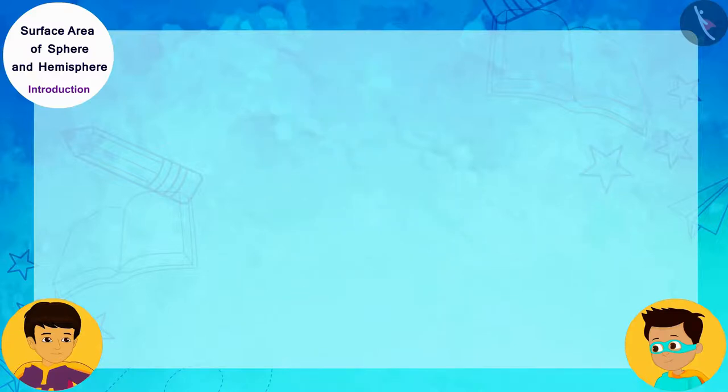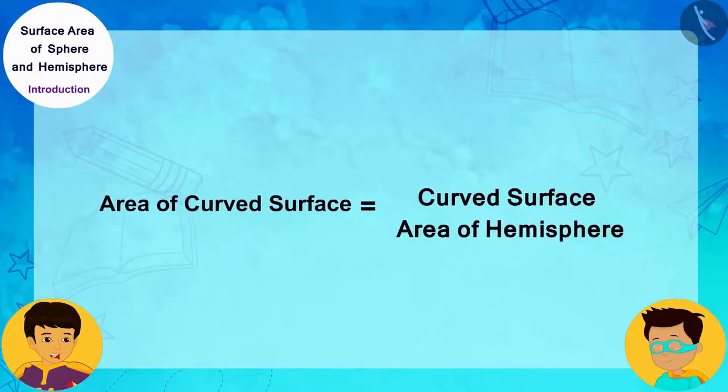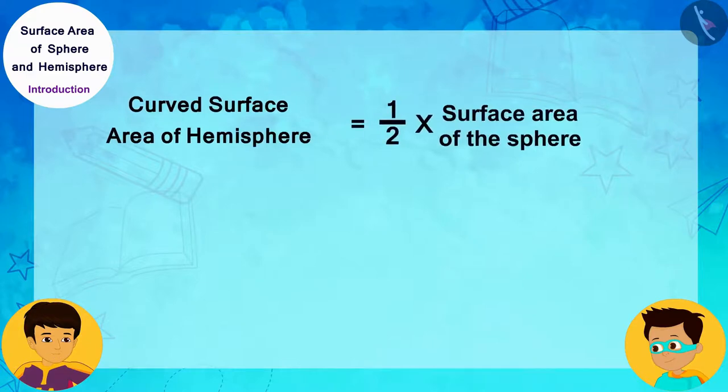That's correct! The area of this curved surface is equal to the curved surface area of the hemisphere. As you can see, the curved surface area of the hemisphere is half of the surface area of the sphere. That is, the curved surface area of the hemisphere is equal to the product of 2 pi and R square, where R is the radius of the base of the hemisphere.